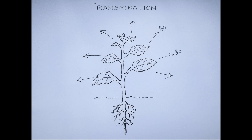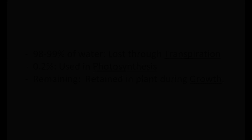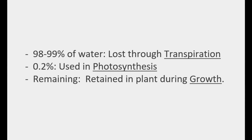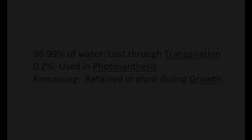Transpiration is an important physiological phenomenon found in plants whereby they lose water in the form of water vapor from the aerial parts and into the atmosphere. About 98 to 99 percent of the water absorbed by a plant is lost through the process of transpiration. Hardly 0.2 percent is used in photosynthesis while the remaining is retained in the plant during growth.